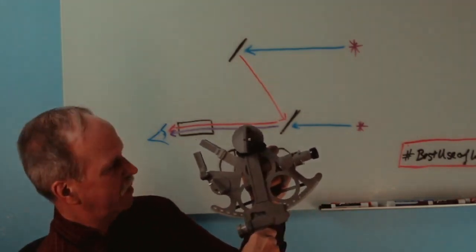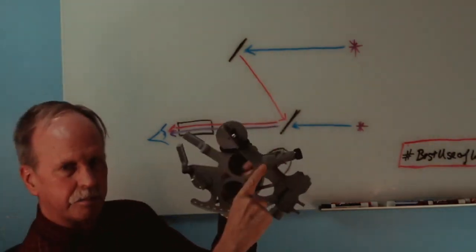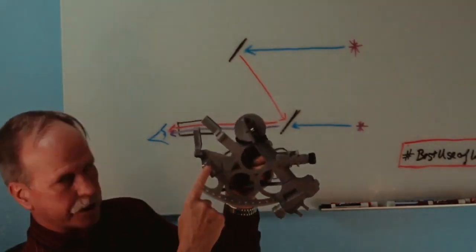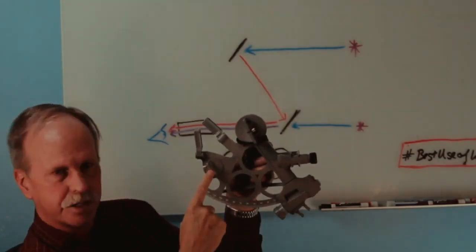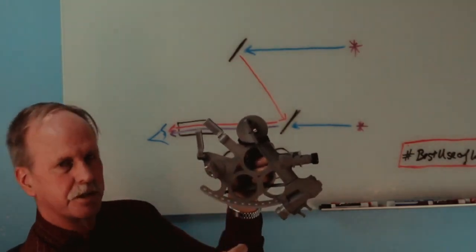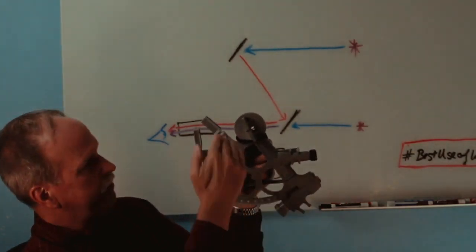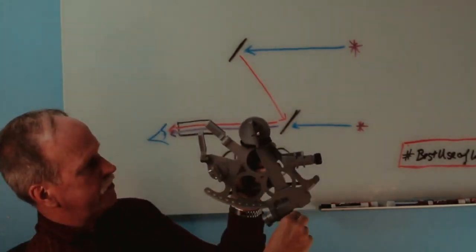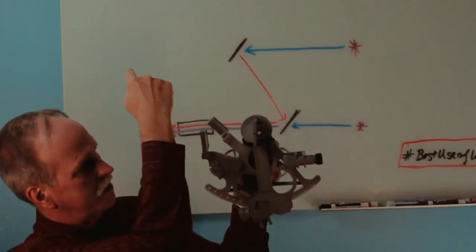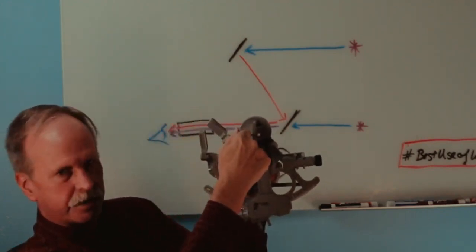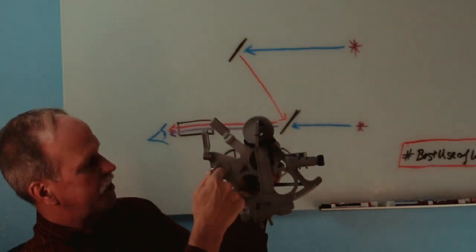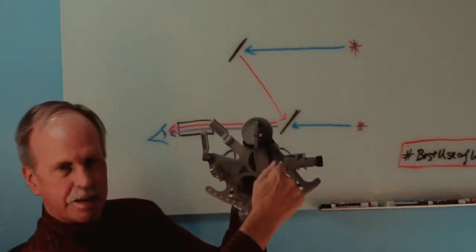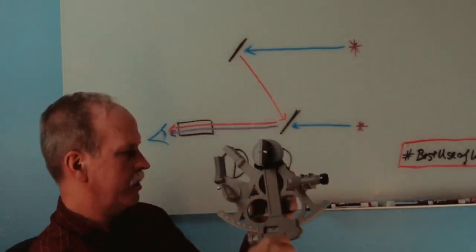Now what happens with this? Say you're looking at the horizon of the ocean through the telescope and through this window on this partially silvered mirror. If you want to look at an object that's up in the sky, what you have to do is you have to bring this arm up until that object is reflected through this mirror, down to this mirror, and then back to your telescope. Let me show you what that looks like.